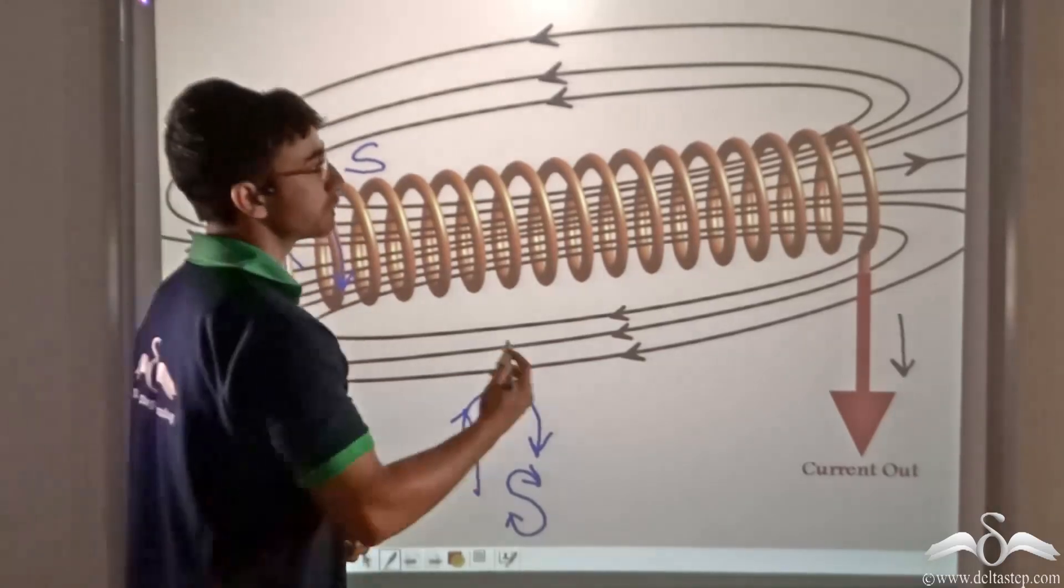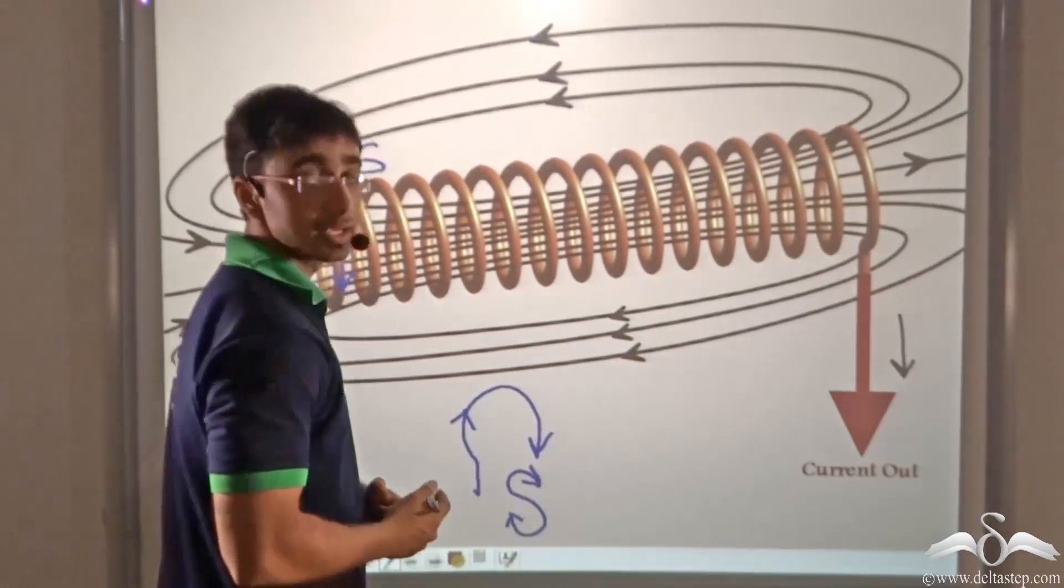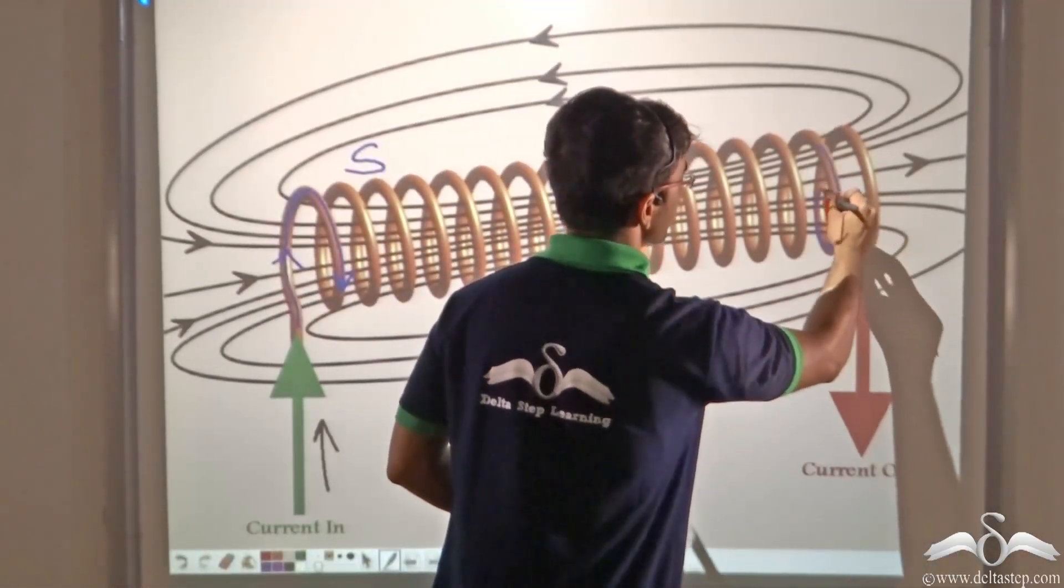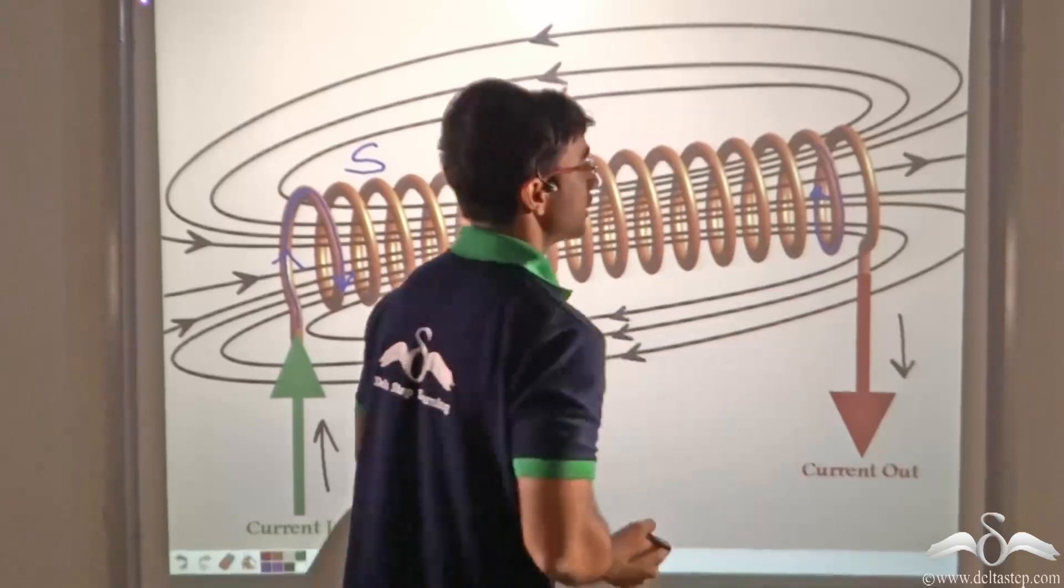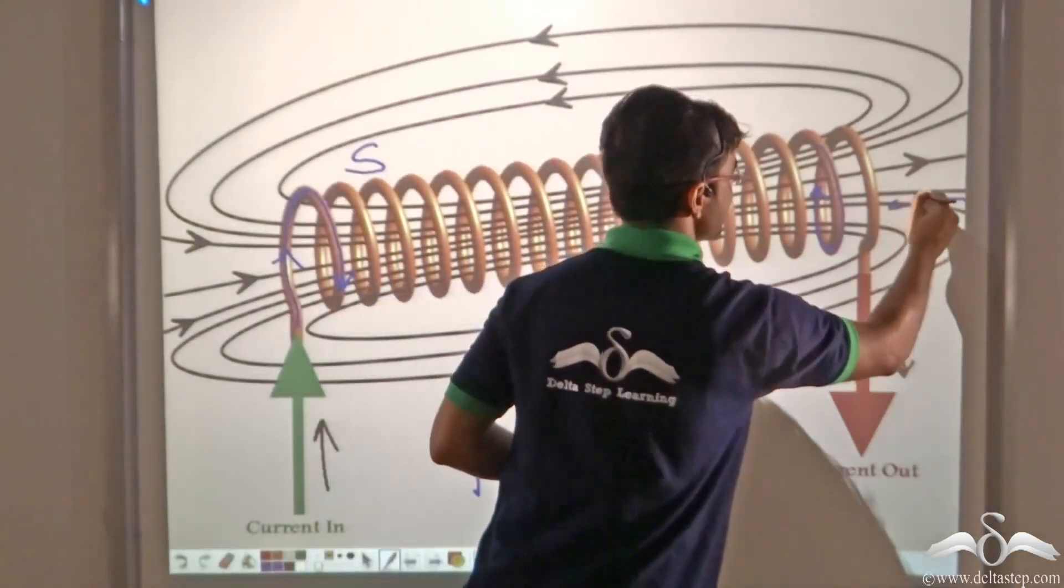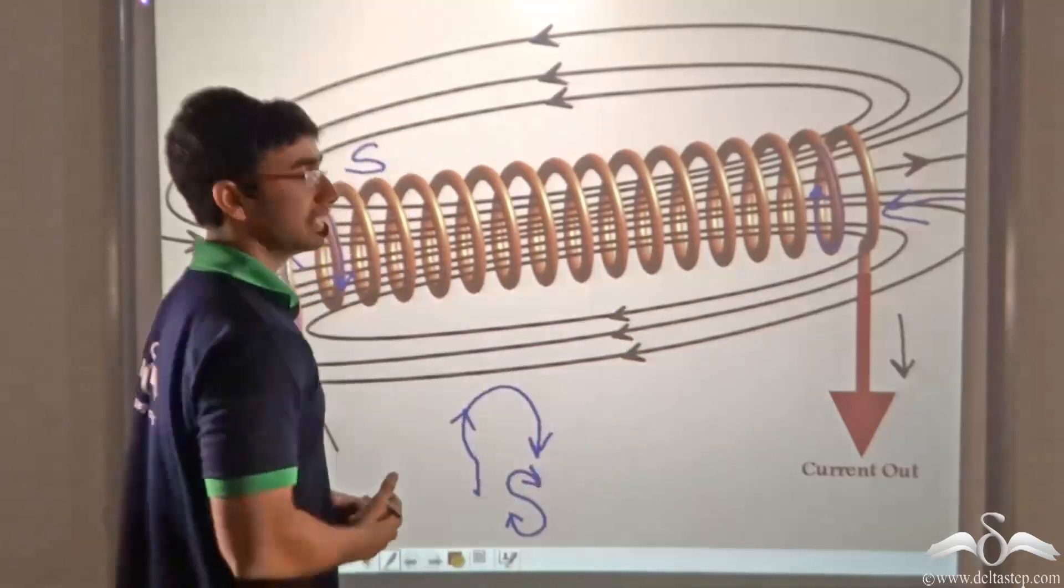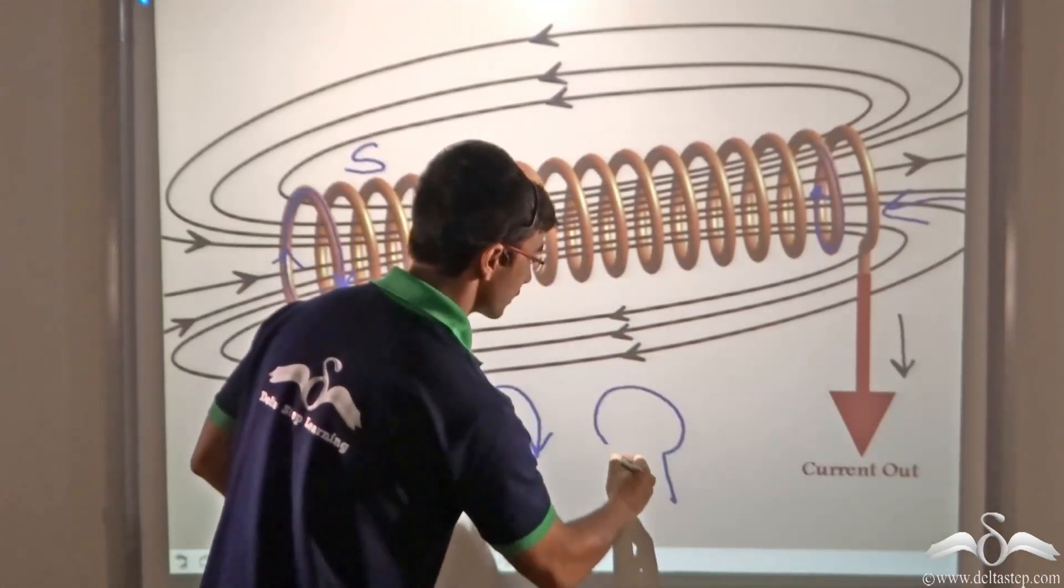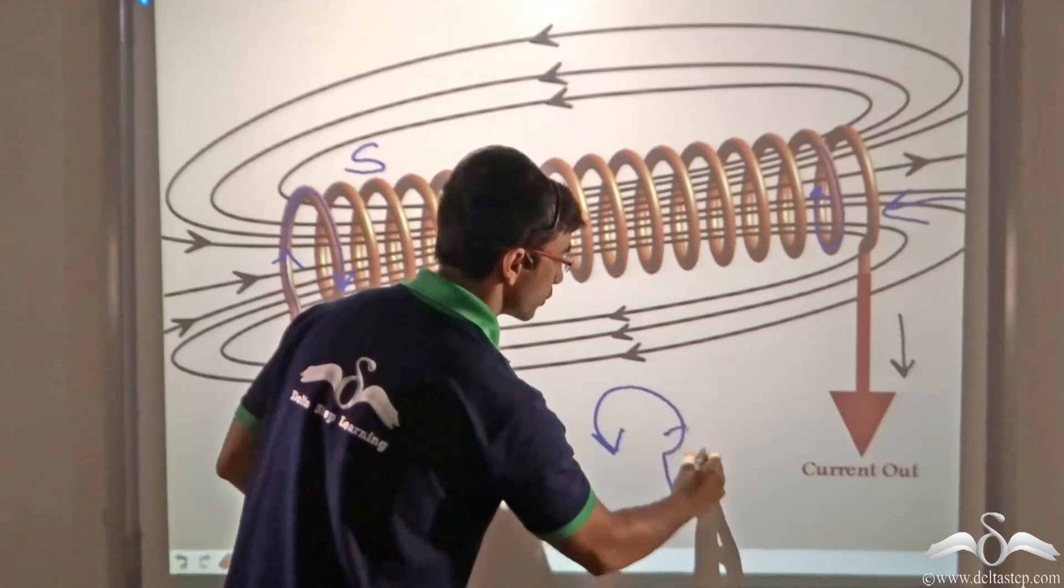Similarly, if we consider the other face, we will find that current is leaving the face in this manner. So if I have to look at that face from this side, I will find that current is moving in the anticlockwise direction.